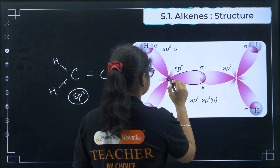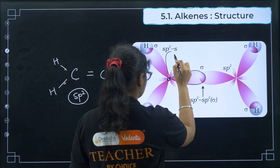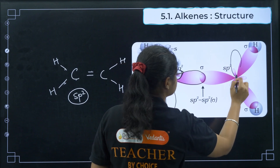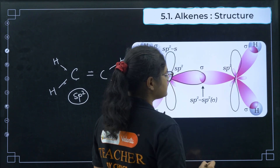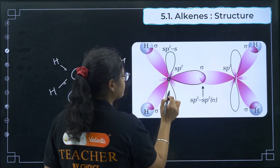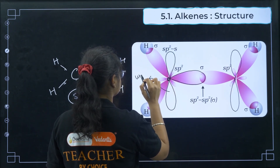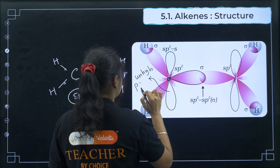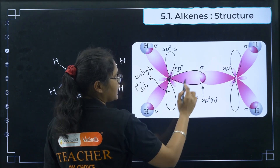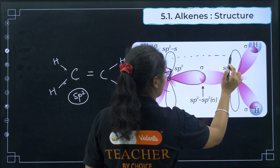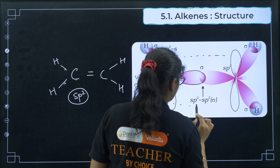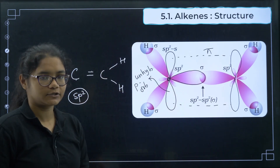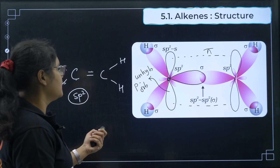Apart from this, there is one unhybridized p orbital on each carbon. These two unhybridized p orbitals undergo sideways overlapping to form a pi bond.